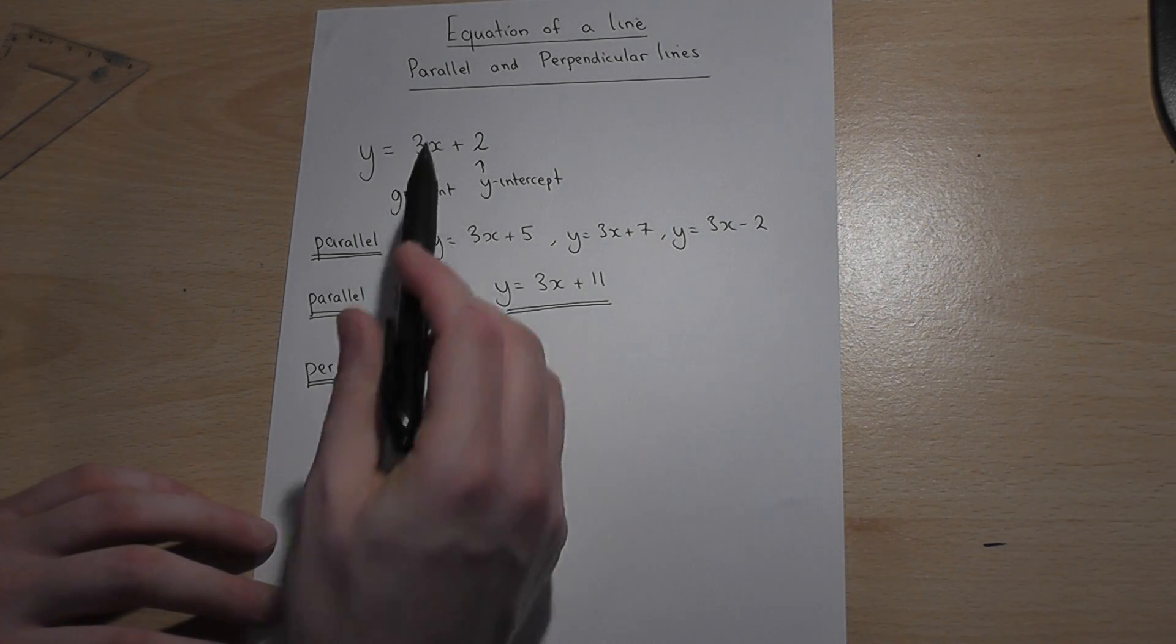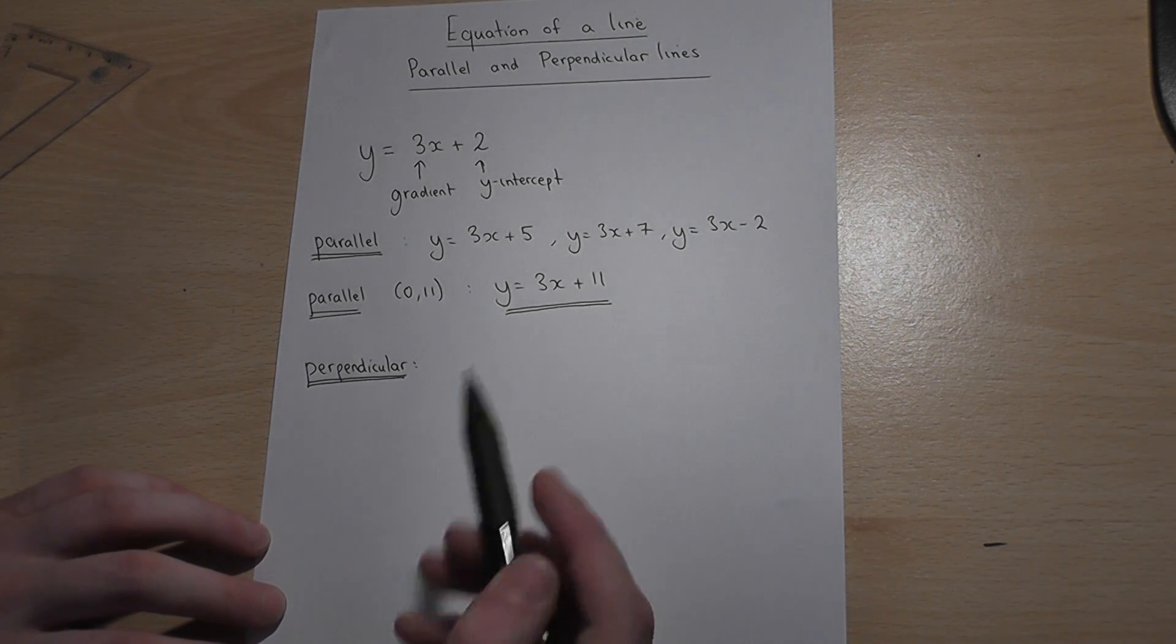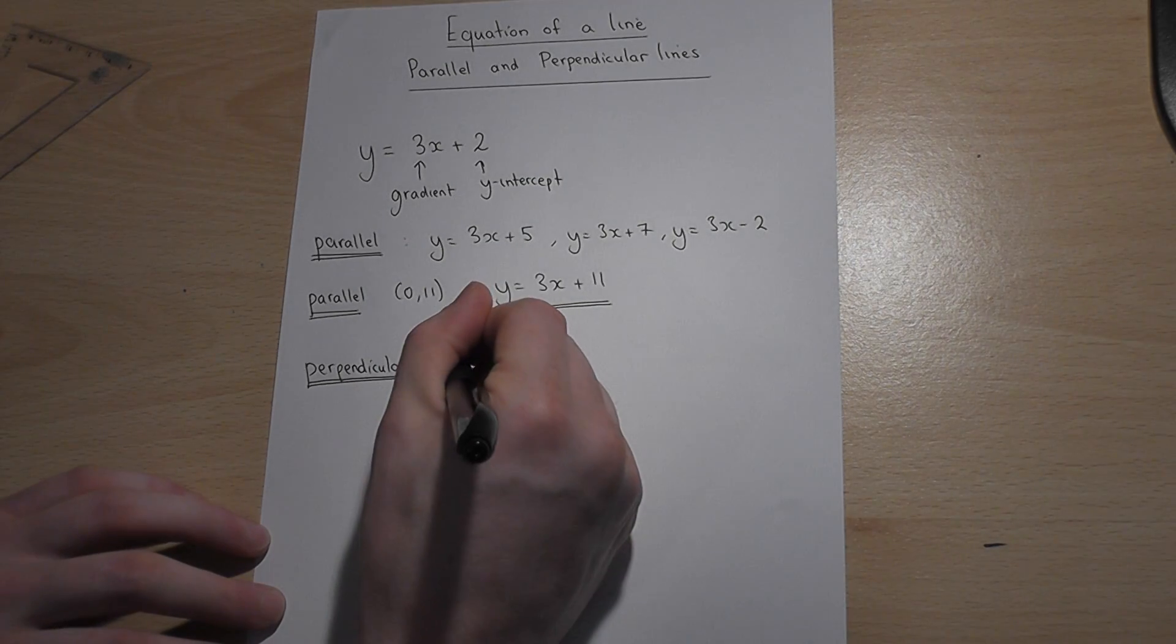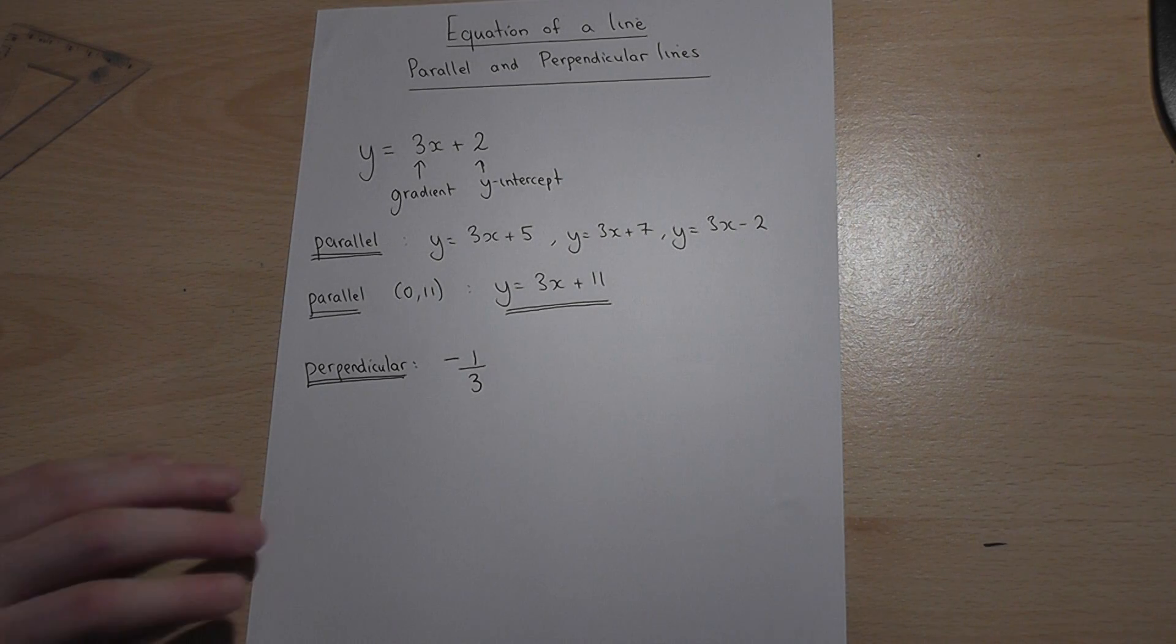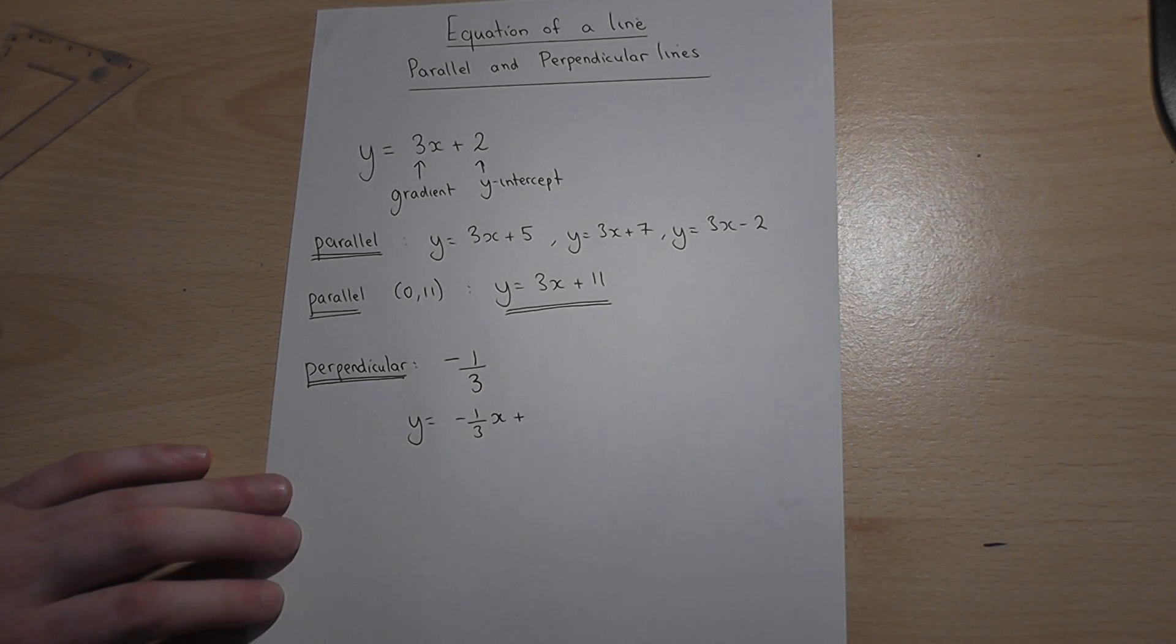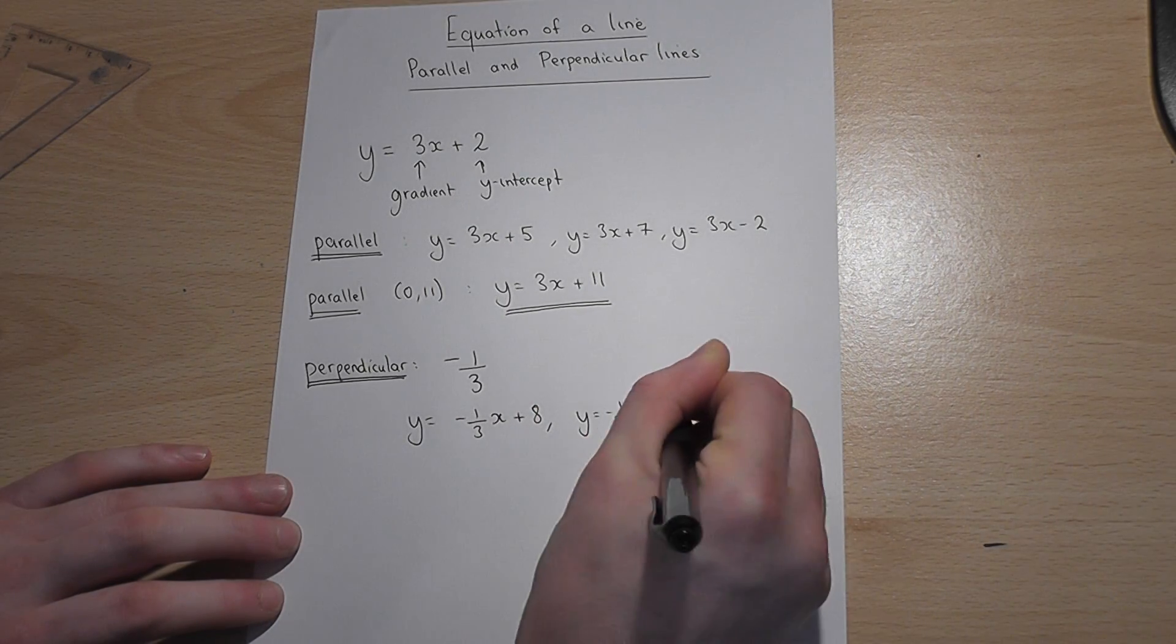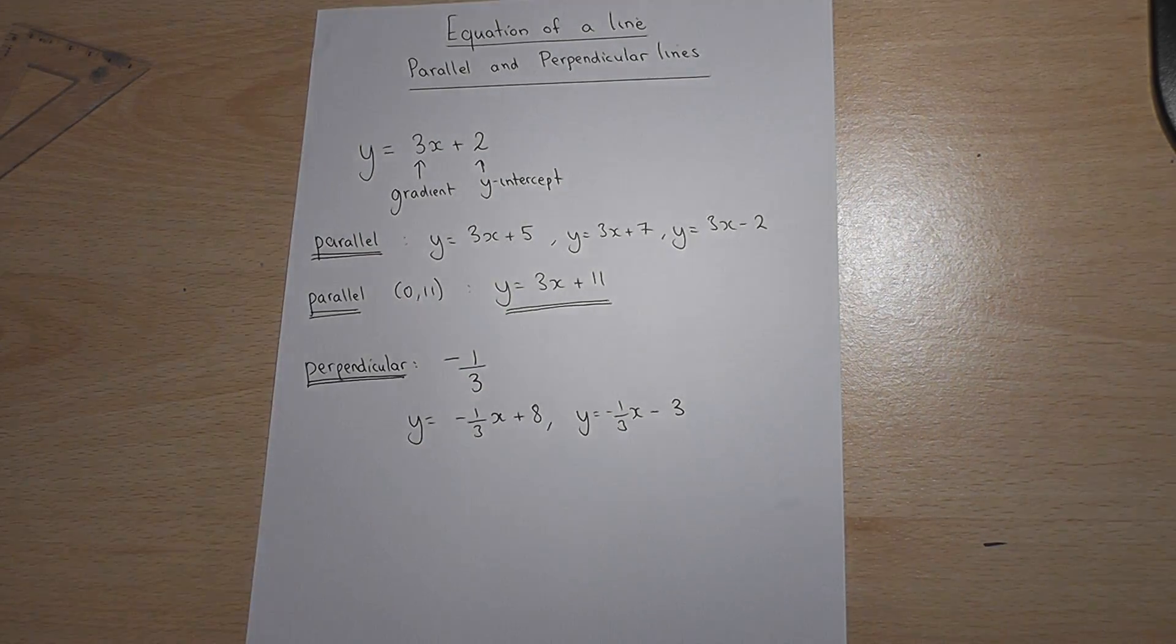If we know the original gradient is 3, then to find a perpendicular gradient, i.e. right angles, we do 1 over the original gradient and change the sign. This will make two lines which cross perfectly at right angles. So an example of a line perpendicular might be y equals minus a third x plus any number you want, so plus 8 or another one. Both of these two lines will be perpendicular to that one there.